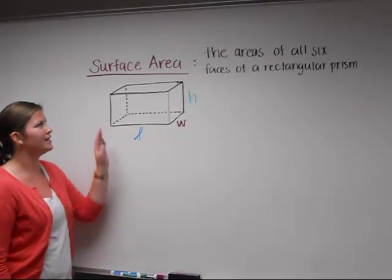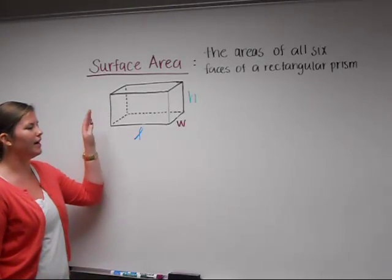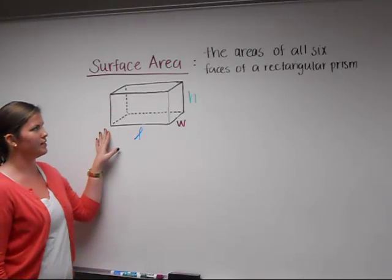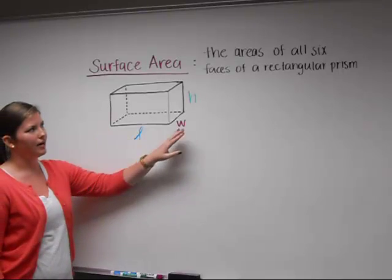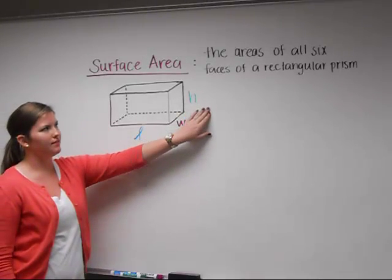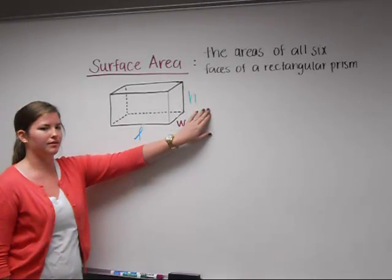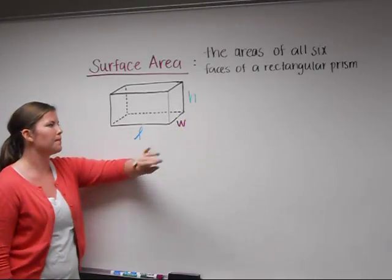Today we're going to be finding the surface area of rectangular prisms. The surface area is the areas of all six faces of the rectangular prism.